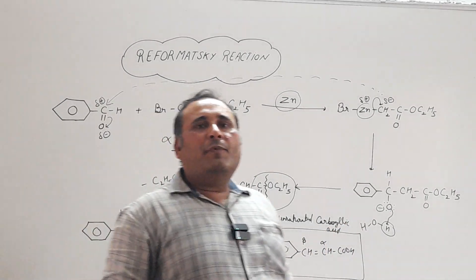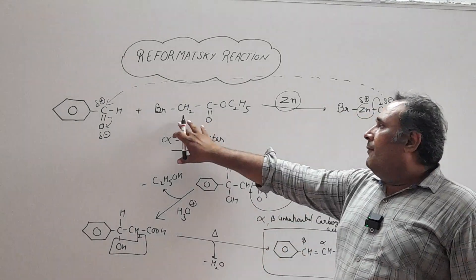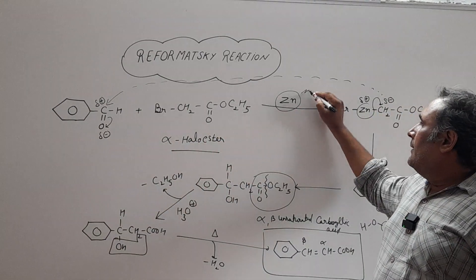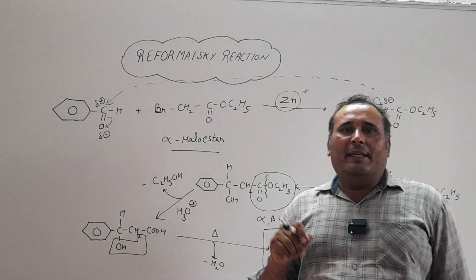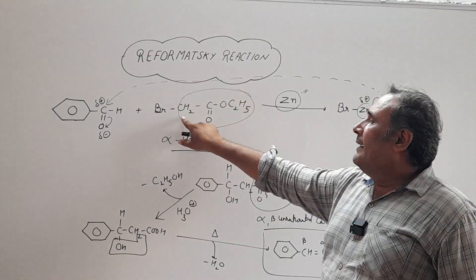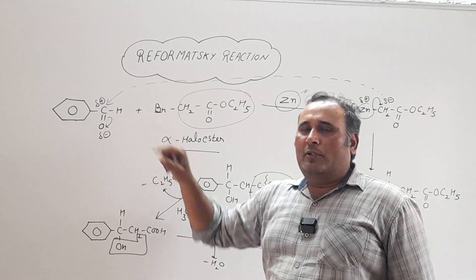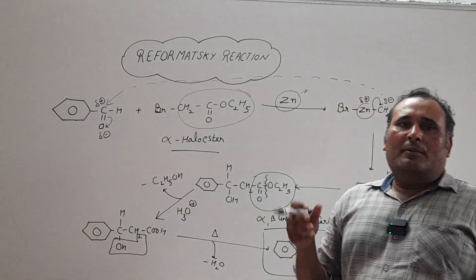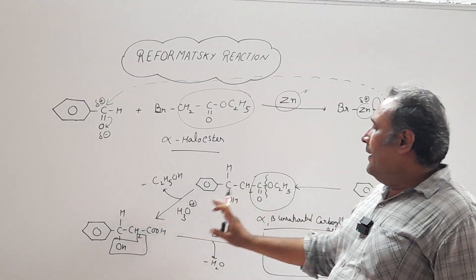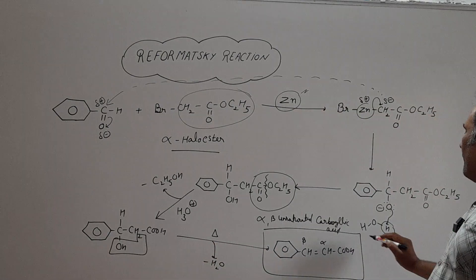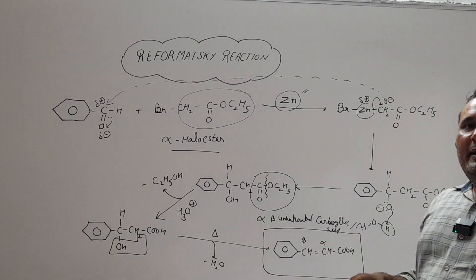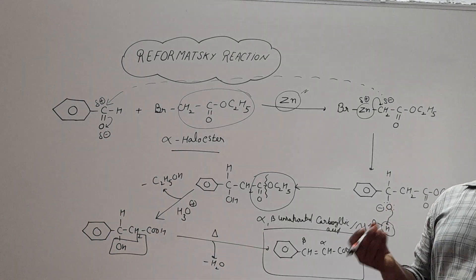So let's summarize the Reformatsky reaction. The alpha-haloester reacts with an aldehyde or ketone in the presence of zinc to first form an organometallic compound. This makes the alpha-haloester behave as a good nucleophile, which attacks the carbonyl carbon. After hydrolysis and dehydration, we get the final product — an alpha-beta unsaturated carboxylic acid.